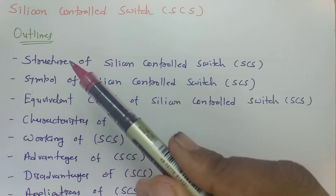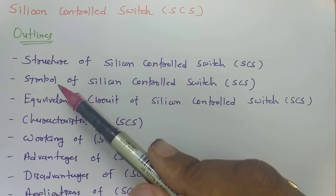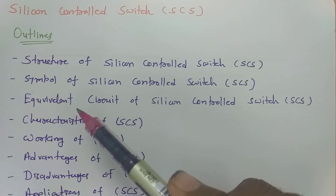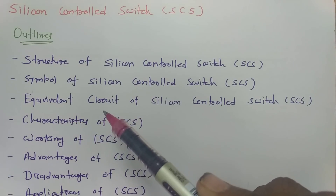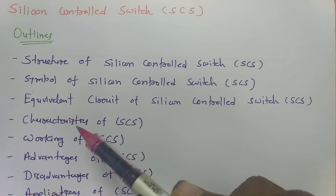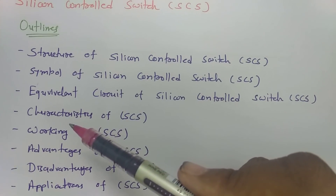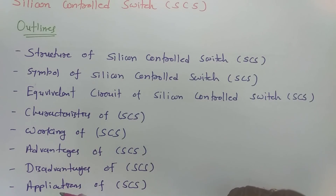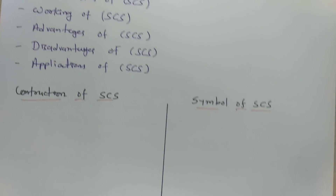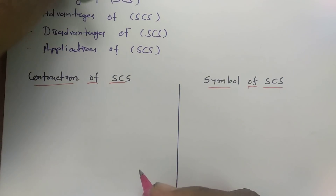I'll be covering the following outline: first, the structure of the Silicon Controlled Switch; then its symbol; then the equivalent circuit of SCS; then the characteristics and working of SCS; and finally advantages, disadvantages, and applications. Let us begin with the first point: construction of SCS.